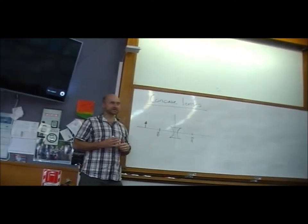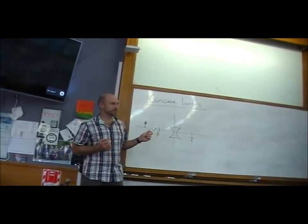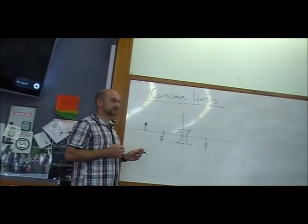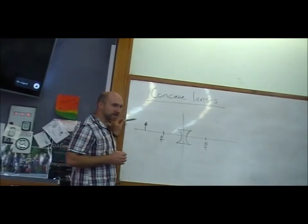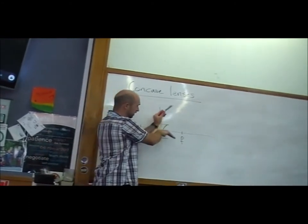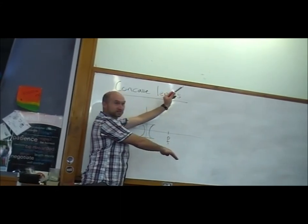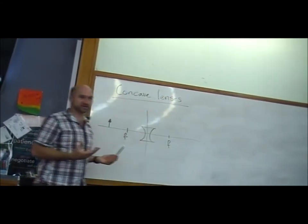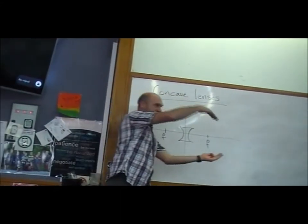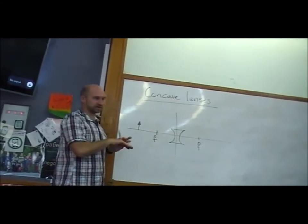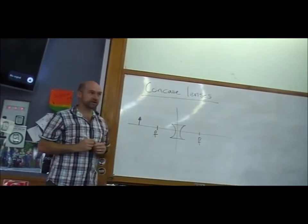So, concave lenses, sometimes you're going to see them described as diverging lenses because parallel rays of light that go in diverge away. So it spreads out light. It's kind of like the opposite to a magnifying glass that focuses light in on a point. This spreads light out away from a point.